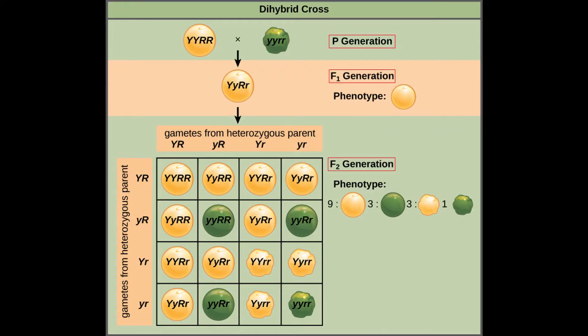The law of independent assortment states that alleles do not influence each other in any way and they segregate in all possible combinations with equal probability. This was shown by Mendel, for example, with the color and the wrinkles of the peas. It certainly works that way when two alleles are far from each other on the genome and they are unlinked.